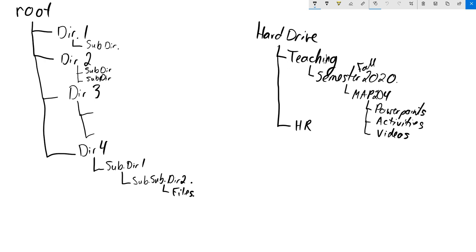I have a hard drive and that is my root directory. I have a teaching folder, an HR folder for my work, then a fall semester folder — so I know that for fall 2020, if I need anything for that semester, I go into that folder. Then I have my MAPS 204 class folder, and within that I have PowerPoints, activities, and this year a new videos folder. I save these all to my hard drive named so I can find them. My PowerPoints are referred to as objectives — for example, 'objectives 1.4 through 1.6.' That is my structure, and you don't necessarily have to use that, but you can.